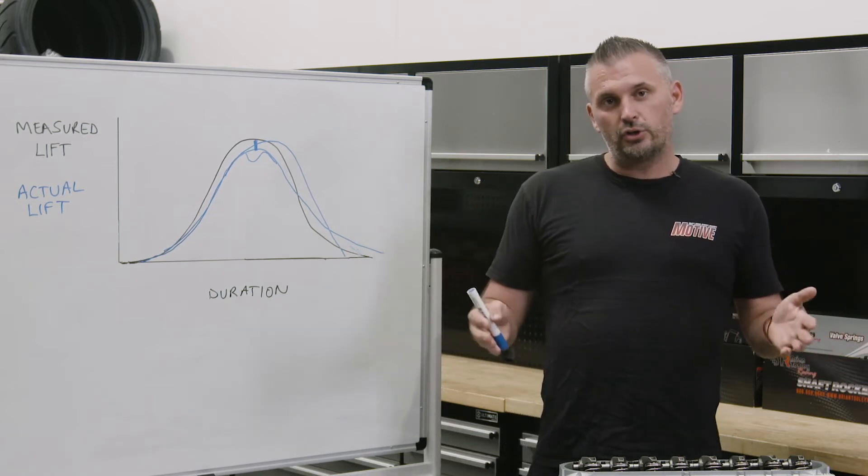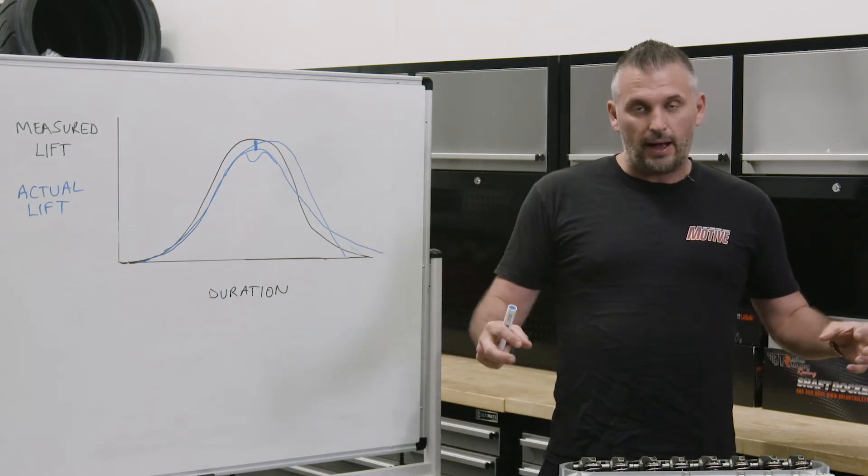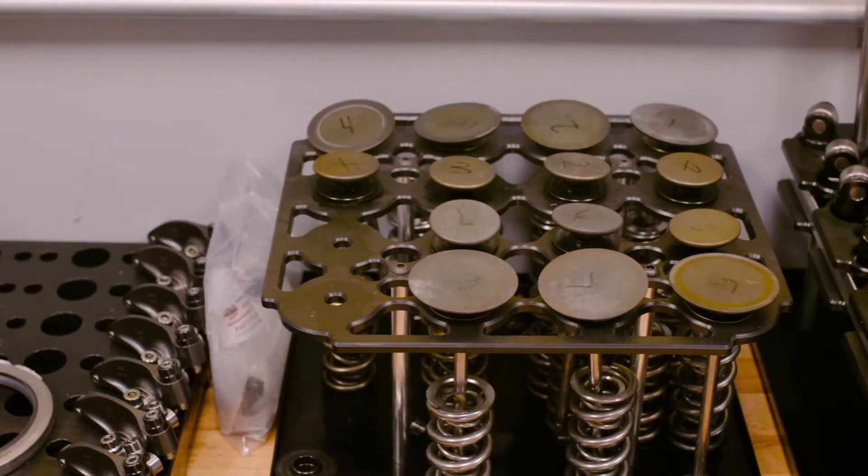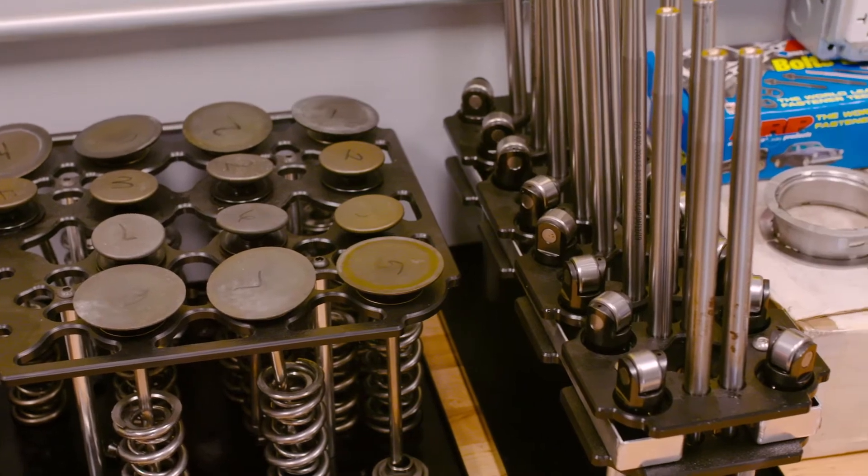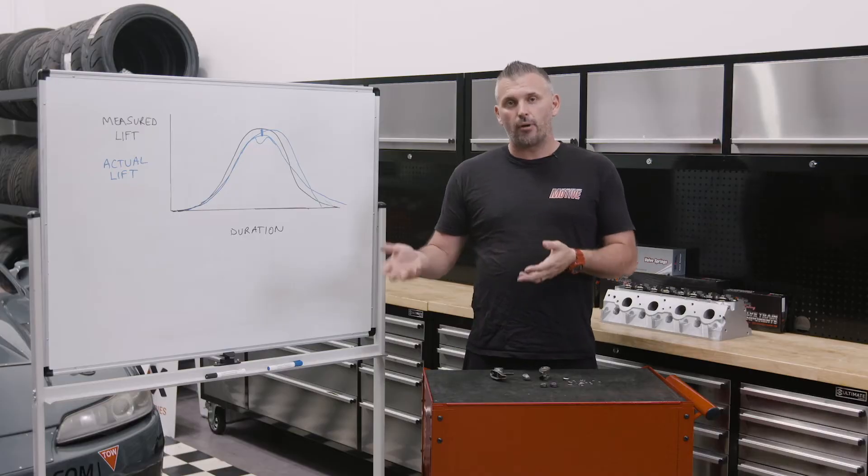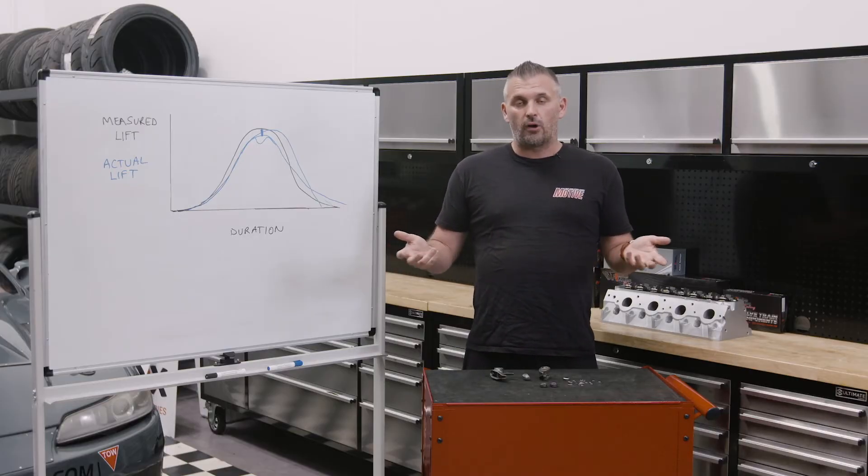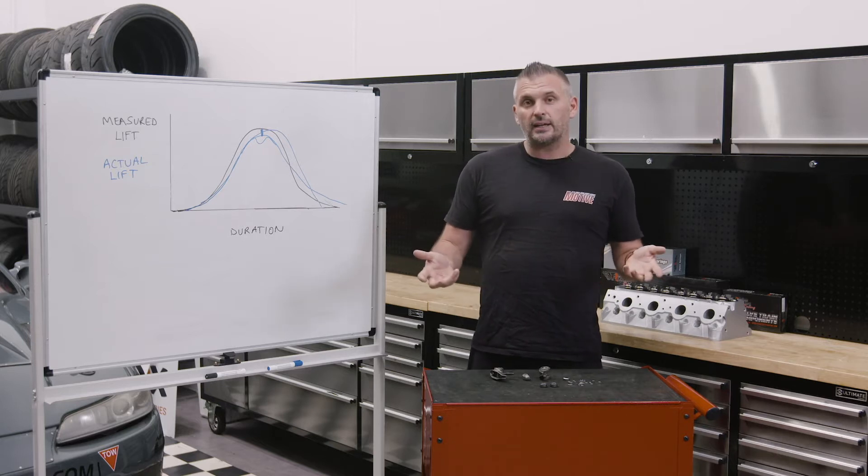The whole point is we want to reduce deflection in all of the parts in our valvetrain. Every part from the lifter, the pushrod, the rocker stand, the rocker, the trunnion, the retainer, the valve, could suffer from deflection or a breakage with increased RPM, strain or power. What we're going to look at today is the trunnion.